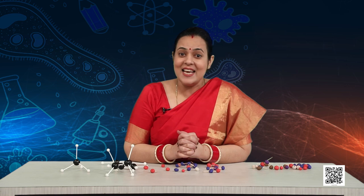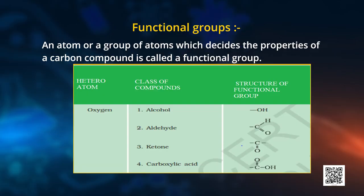Up till now we just have a vision of hydrocarbons containing carbon and hydrogen. But what if in addition to carbon and hydrogen, there is another heteroatom like oxygen? Let us talk about functional groups. An atom or a group of atoms which decides the properties of a carbon compound is called a functional group. The functional groups have been classified into four types.